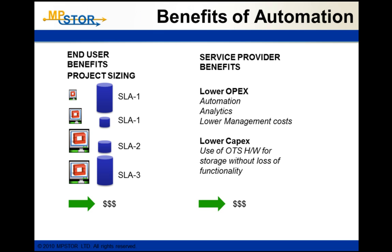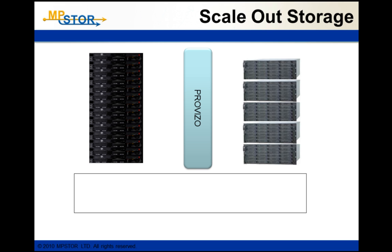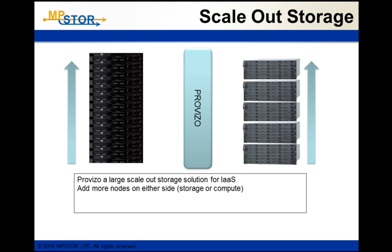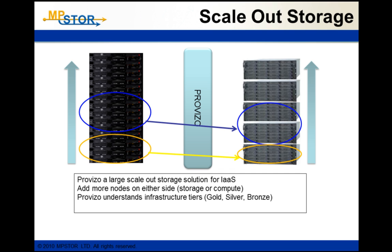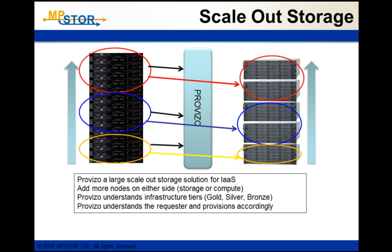So, what is Proviso? Proviso is a scale-out storage solution for delivering infrastructure as a service. It allows adding more nodes on either side — compute or storage — and Proviso will manage that. Proviso also understands the concept of infrastructure tiers. I can set my tiers up as gold, silver, and bronze, then understand requests from those various tiers and provision the storage accordingly. This is a great benefit in setting service level agreements — people provisioning from the gold tier would get gold quality, and silver and bronze accordingly.